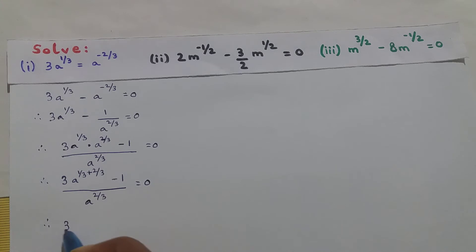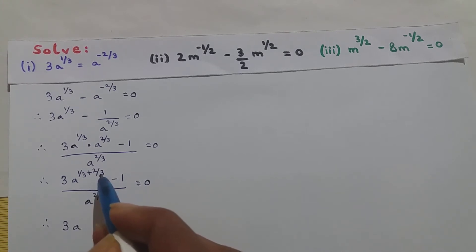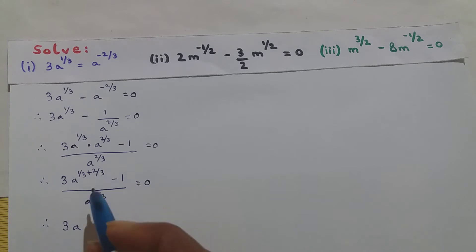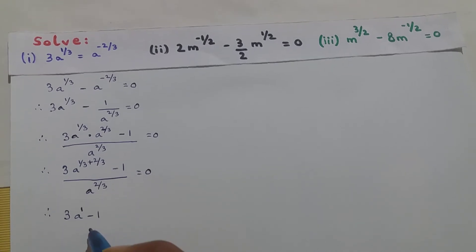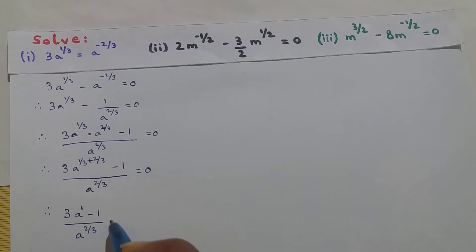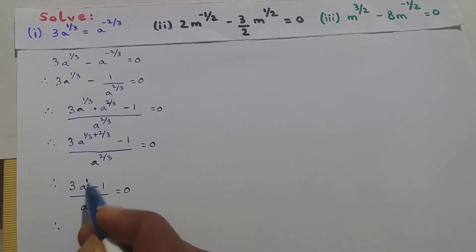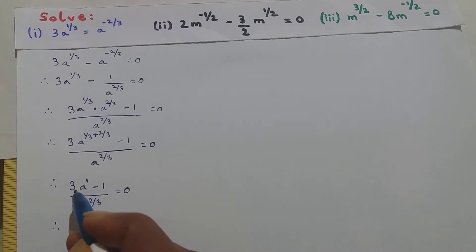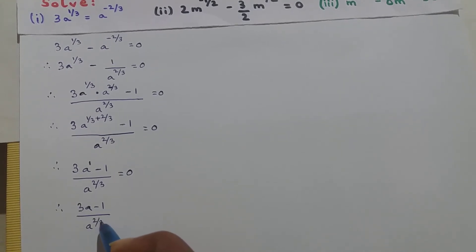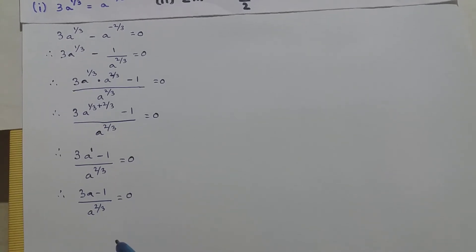So 3a to the power 1/3 into a to the power 2/3 simplifies to 3a to the power 1, since 1/3 plus 2/3 equals 1. So the expression becomes 3a minus 1 upon a to the power 2/3 equals 0. Now I will shift a to the power 2/3 to the right hand side.